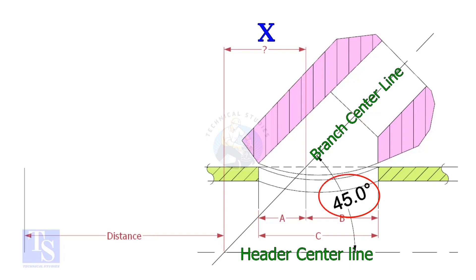If the included angle is 45 degrees, the value of x will always be half OD of the header. Suppose the OD of the header is 400mm, then the value of x will be 200mm. Mark the half OD in the direction of the laterolet. Mistakes happen when marking the direction of the laterolet.